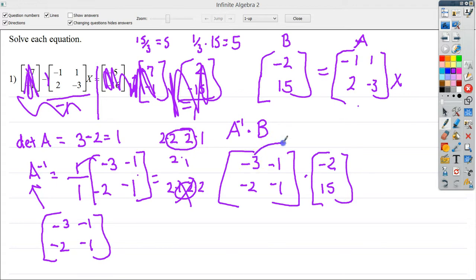So I'll do negative 3 times negative 2, which would give me 6. And then negative 1 times 15, so I get minus 15. Then I'll do negative 2 times negative 2, which would leave me with 4. And then negative 1 times 15, which would give me negative 15 again. Pretty popular number.